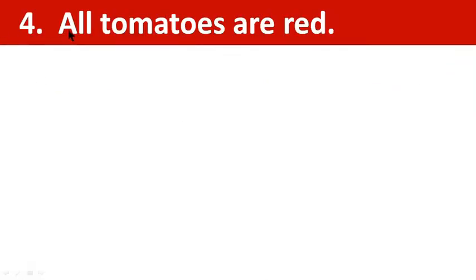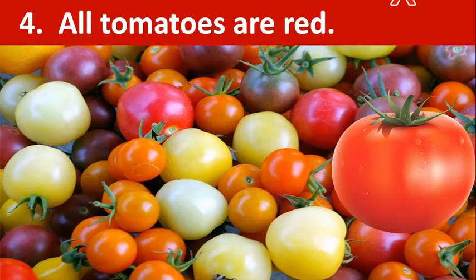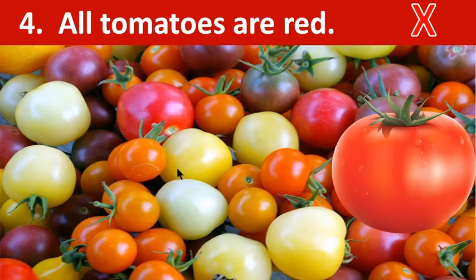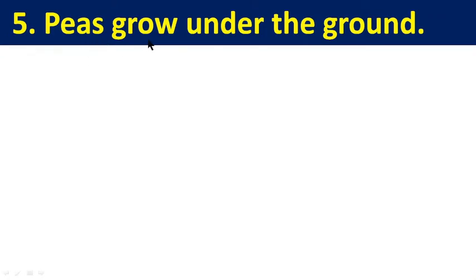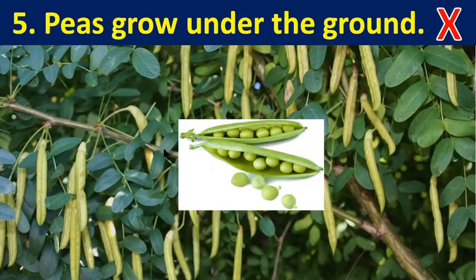Number four: All tomatoes are red. If we observe, some tomatoes are green, some are red, and some are another color. Not all tomatoes are red, so this sentence is not correct. Number five: Peas grow underground. In the picture we can see a pea plant, but peas don't grow underground — peas grow on the branch of the plant. So this sentence is wrong.